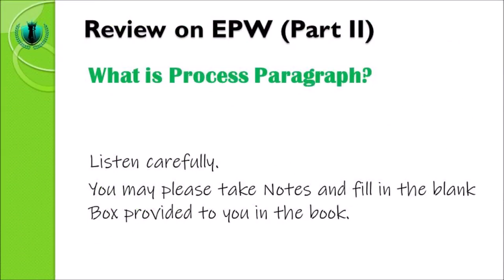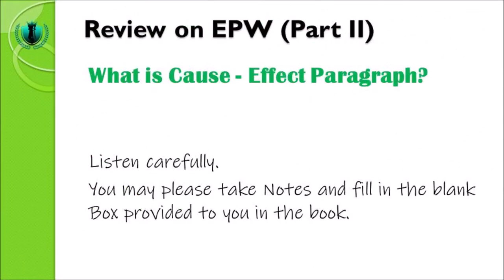The way you explain how something becomes something else, or from A to B, is known as process. Process paragraph is a paragraph used to express the process of how a being goes from A to become B. For example, the process of cooking noodles, or the process of making a chocolate cake in your kitchen. The fourth genre we learn in EPW course is cause-effect paragraph, defined as a paragraph that explains the causal relationship of two items: cause and effect. Several causes create several effects. A certain cause creates a certain effect, and this cause-effect paragraph explains that connection.